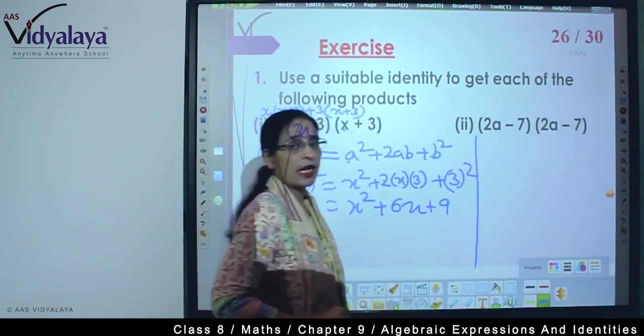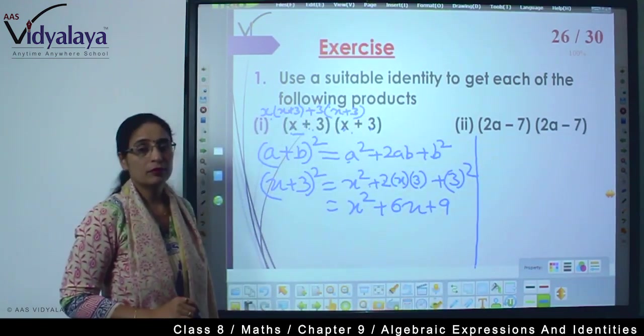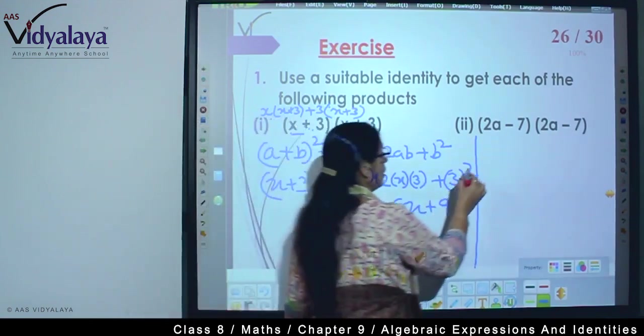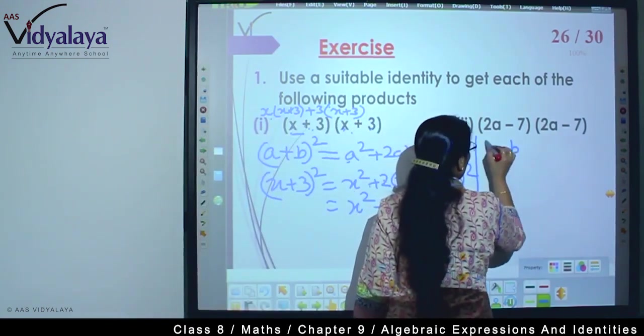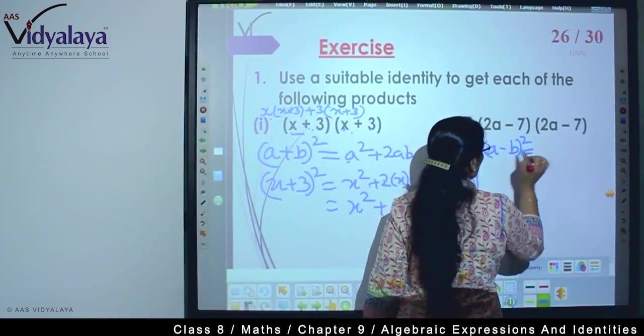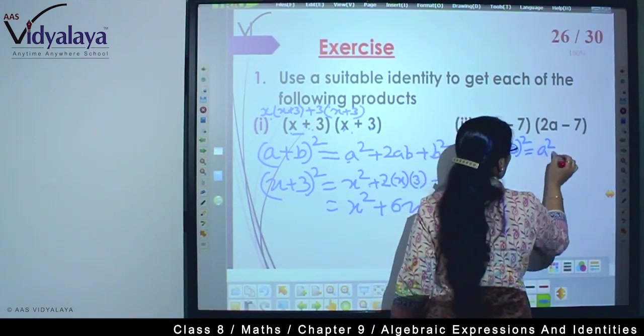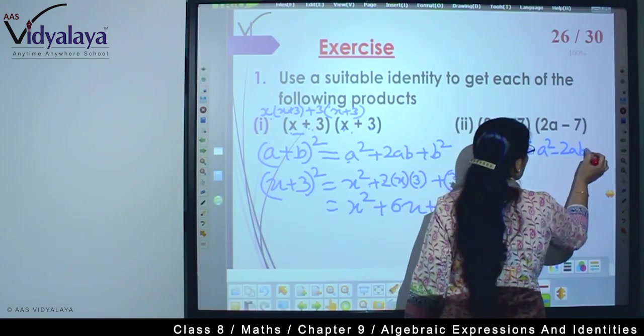Moving to the next part. Which identity does this look like? (a-b)², right? (a-b)² gives us a² - 2ab + b².